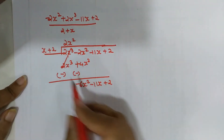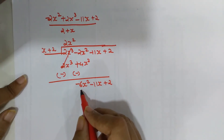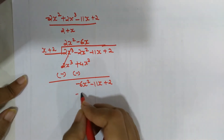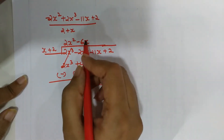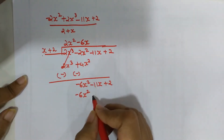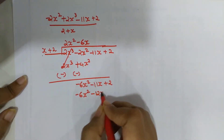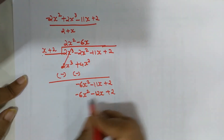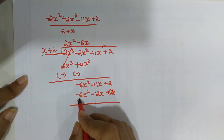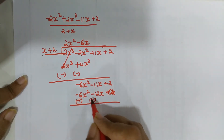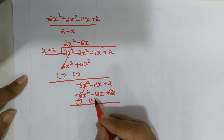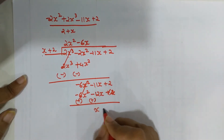Now x must be converted in terms of minus 6x squared, so I multiply by minus 6x. This gives minus 6x squared from x times minus 6x, and minus 6 multiplied by 2 gives minus 12x. The signs are changed for subtraction, so minus 6x squared is cancelled. Then minus 11x plus 12x gives just x plus 2.